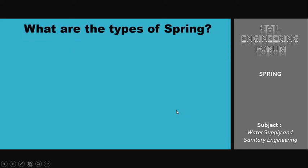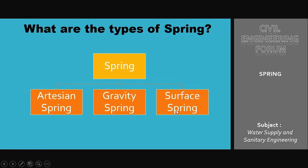Now moving to the second question: what are the types of spring? Spring is classified into three different types. The first and most common is the artesian spring, which we saw in the figure earlier. The second is the gravity spring. The third is the surface spring. We'll now move toward the first type — the artesian spring.